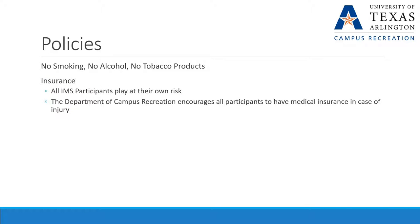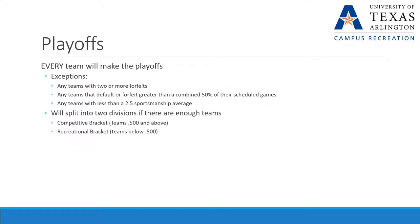In all of our intramural sports sites, there is no smoking, no alcohol, and no tobacco products. All intramural sports participants play at their own risk; however, the Department of Campus Recreation encourages all participants to have medical insurance in case of injury. Every team makes the playoffs except for teams that have two or more forfeits, teams that default or forfeit greater than a combined 50% of their scheduled games, or any teams with less than a 2.5 sportsmanship average.